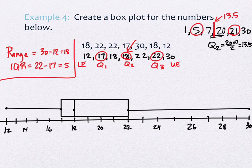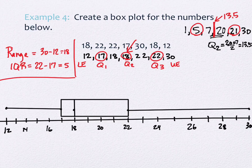This graph merges things together - I can't see all my individual data values, but I can see important features. At a quick glance I can see the median at 18, the lower and upper extremes at 12 and 30. I can see that 50% of values are between Q1 (17) and Q3 (22). There's 25% of values in the small lower whisker, and 25% in the longer upper whisker. In general, it would need a title if we had context.